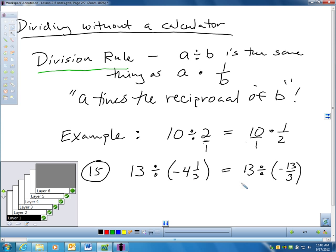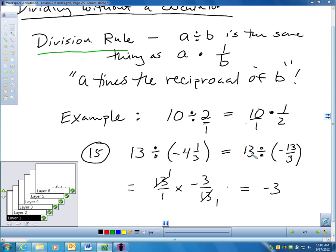So let's do that. First of all, I don't want negative 4 and 1 third. I'll make that into a top-heavy fraction. I don't want to divide with mixed numbers. So I'm going to change this into 13 divided by negative 13 thirds. So negative 13 thirds is the same thing as negative 4 and 1 third. Well, now I'm going to apply the division rule. I'm going to quickly multiply by the reciprocal. So I'm going to take 13 times negative 3 thirteenths. And now before I multiply all this out, I see,